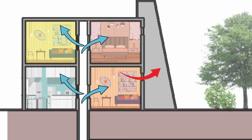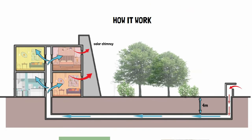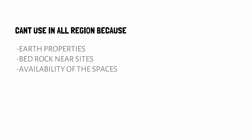Solar chimney can also be added to extract hot air from rooms. So that's how earth air tunnel works. But it can't be suitable in all regions due to earth properties, bedrock near the project site, and availability of spaces.